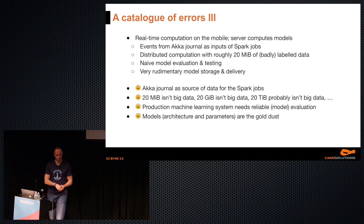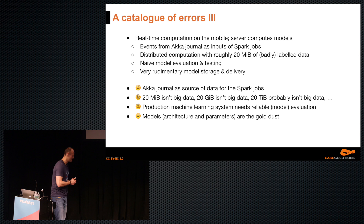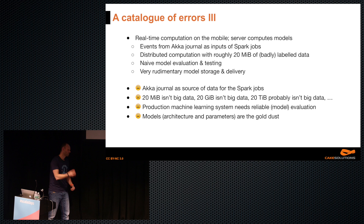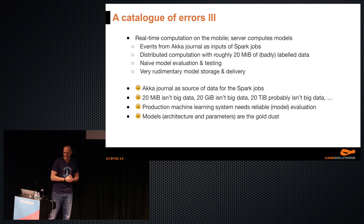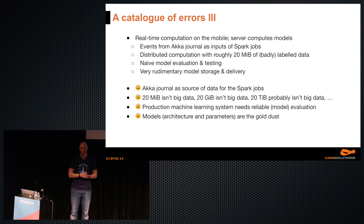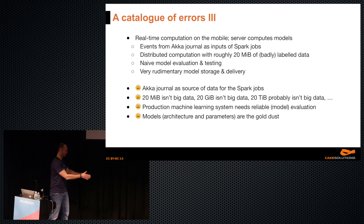We thought: let's move all computation to the mobile app. Everything got evaluated on the phone. We thought since we had a CQRS application with all events in the journal, we could use those events as inputs for Spark jobs — not just user registration but all the sensor data. We tried: distributed computation on a cluster of Spark machines. We had 20 megabytes of data. That was a bit of a bummer. We had very naive model evaluation and testing.